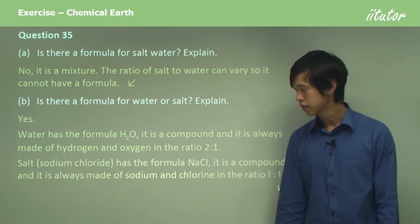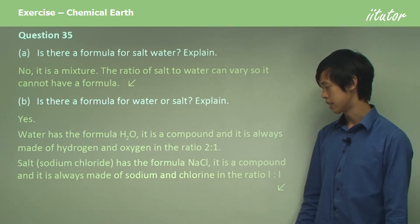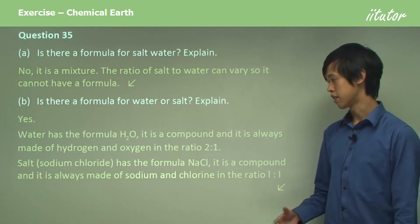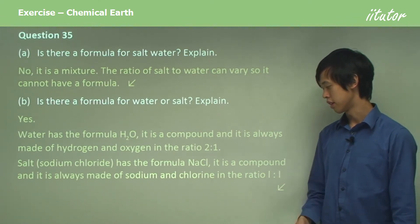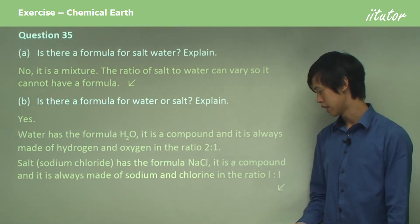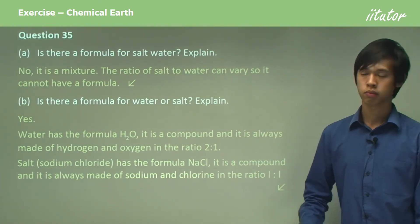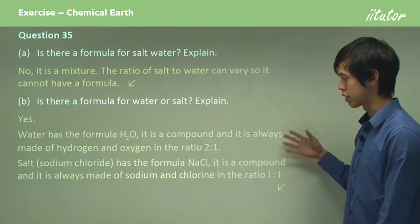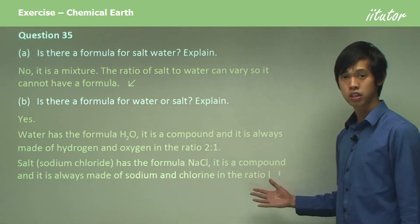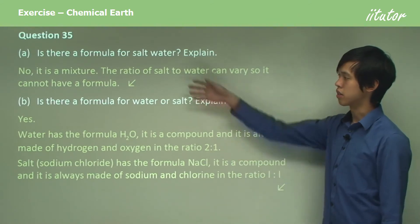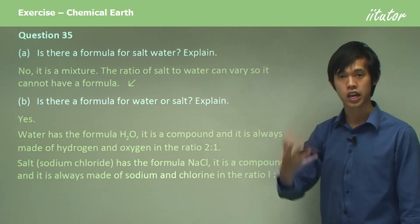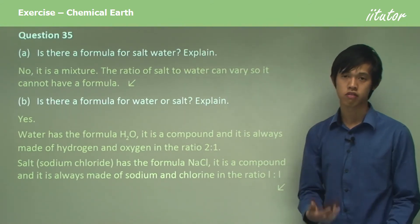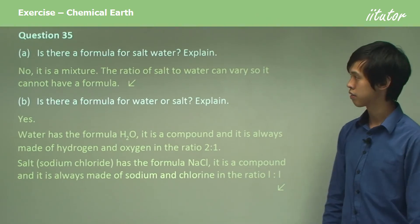Salt, or sodium chloride, has the formula NaCl. It's a compound and it's always made of sodium and chlorine in the ratio of 1 to 1. So you can see that these always retain the same ratios, whereas salt water can change its ratio. So it can't have a formula.